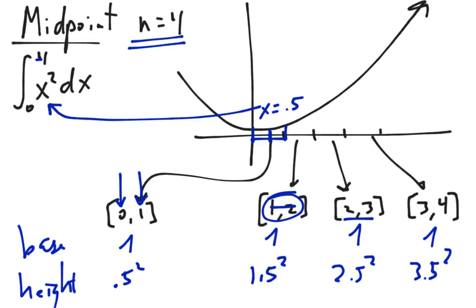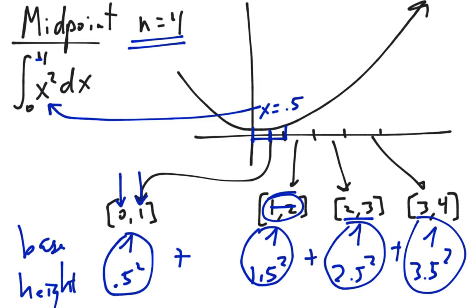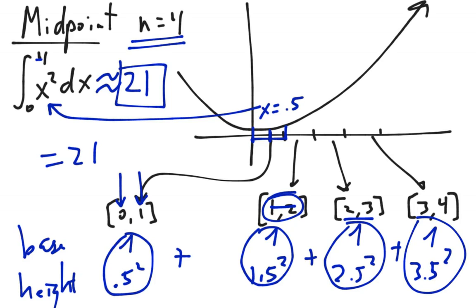When I add all of these up — 1 times 0.5 squared, plus 1 times 1.5 squared, plus 1 times 2.5 squared, plus 1 times 3.5 squared — this gives me a value of 21. So this integral is approximately equal to 21 using a midpoint Riemann sum. When I draw this, the rectangles are drawn very similarly to before.